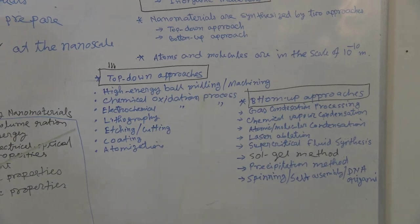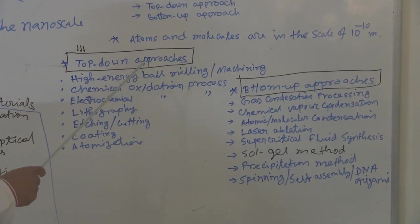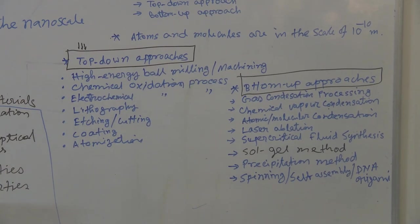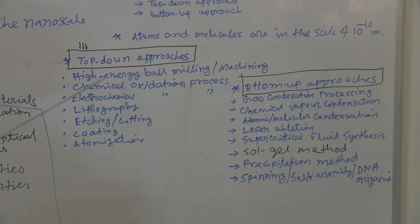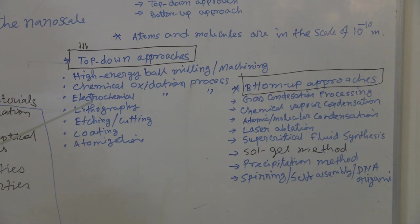If you look for top-down approaches, there are many top-down approaches like high-energy ball milling process or machining. It means we are taking big materials and grinding. Then another chemical oxidation process, electrochemical oxidation process, lithography, etching or cutting, coating and atomization. These are the processes coming under top-down approaches.